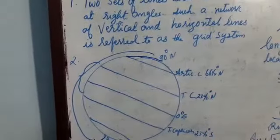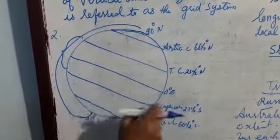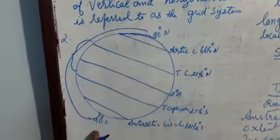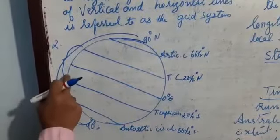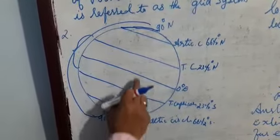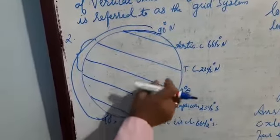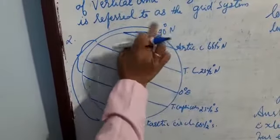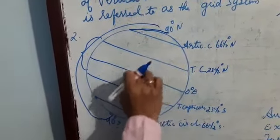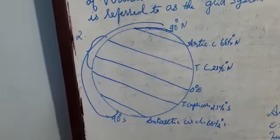The characteristics of latitudes are: first, all the parallels are complete circles except 90 degree north and 90 degree south. The equator is the largest parallel, and the length of other parallels decreases towards the poles. The distance between the latitudes is the same — one degree of latitude equals 111 kilometers.